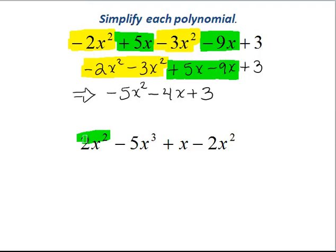Notice, here's my 2x squared, so I'll highlight that in one color. I have a minus 2x squared here. And notice that the remaining two terms are different.